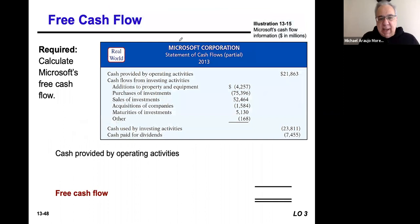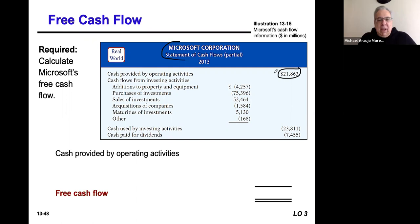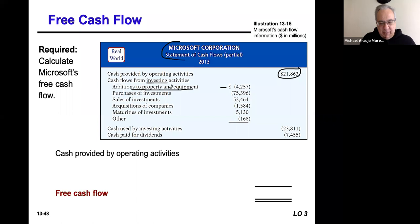Here's a cash flow statement for Microsoft showing the cash provided by operating activities — that's the starting point. We subtract out the capital expenditures. Now, there are a lot of investing activities listed here, but a capital expenditure is property, plant, and equipment specifically. So any addition to property, plant, and equipment is a capital expenditure, and that's the only thing we're going to subtract out from that list.